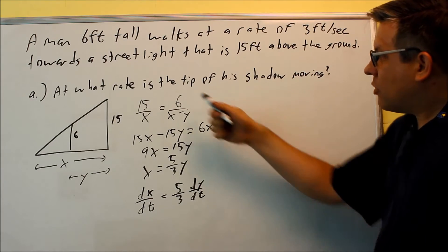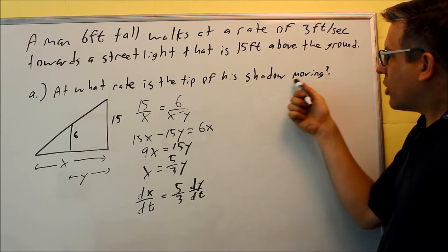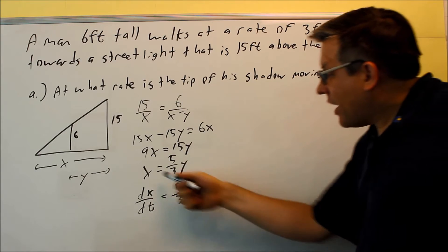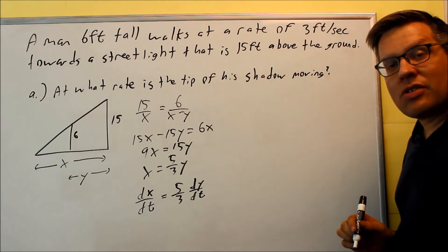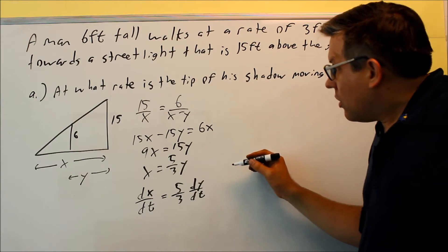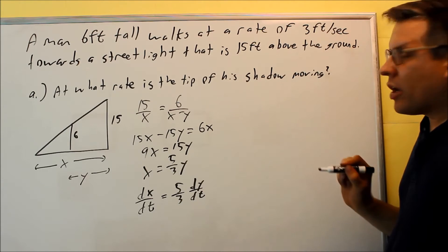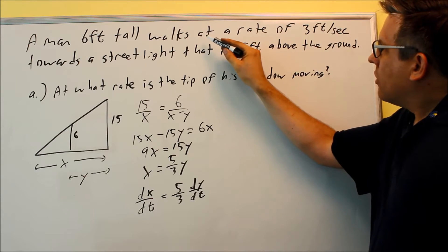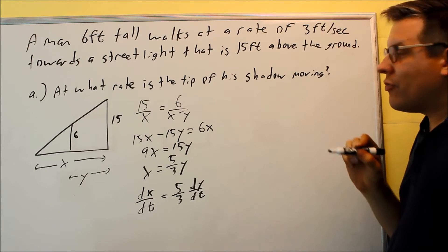So it's asking me at what rate is the tip of a shadow moving. That is going to be dx dt that it's asking us to solve for. Now let's take a look at the problem and see what else they give us.